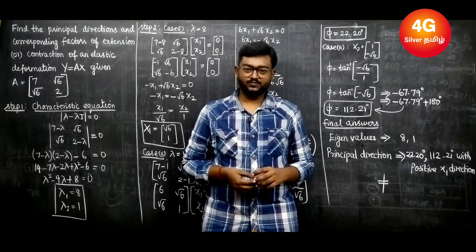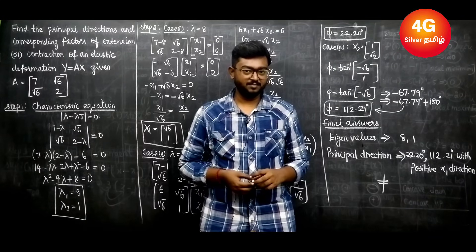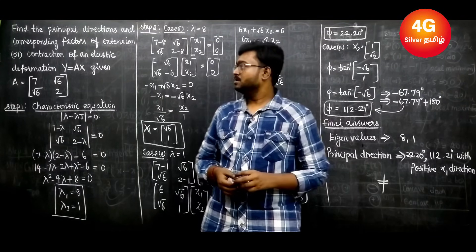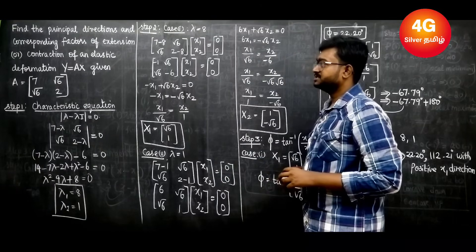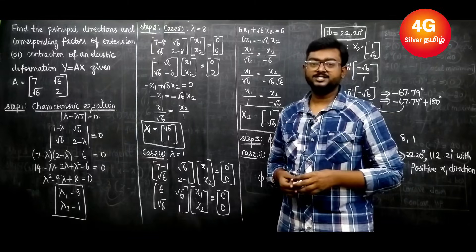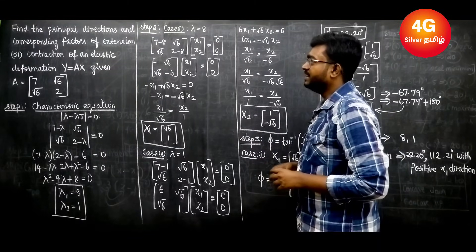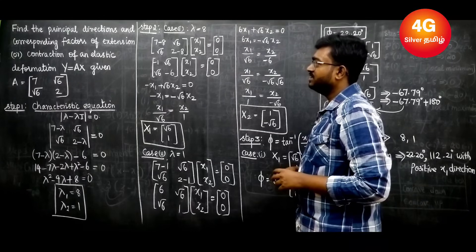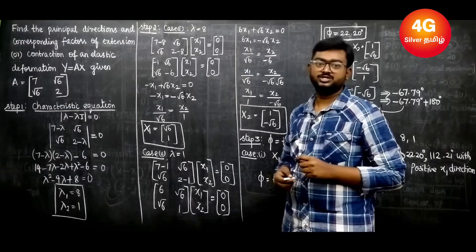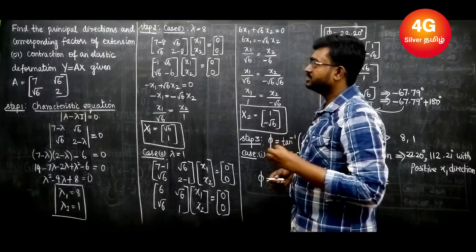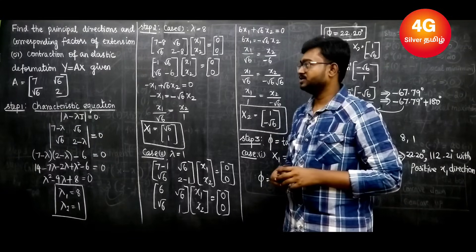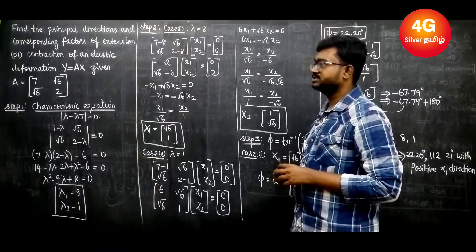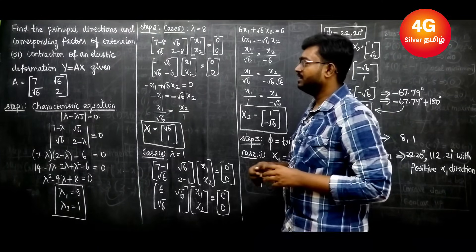Welcome students, welcome to 4G Silver Academy Tamil. In this video, we are going to find the principal directions and corresponding eigenvectors. Find the principal directions and corresponding factors of extension or contraction of an elastic deformation y=Ax, given A equals [7, √6; √6, 2].